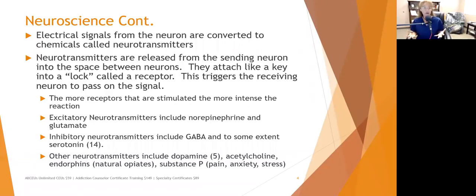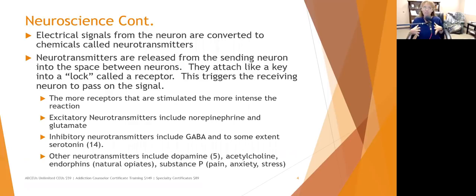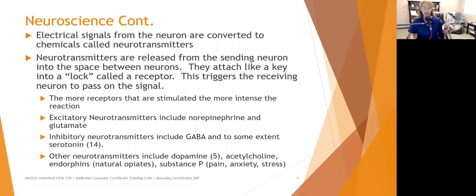For example, when somebody takes cocaine, it secretes excitatory neurotransmitters like glutamate into the synaptic cleft, flooding the receptors and giving the person a super charge of excitement. The excitatory neurotransmitters include norepinephrine and glutamate. This is overly simplistic — most neurotransmitters are involved in many things. There are other videos on the AllCEUs education channel at allceus.com/YouTube about neurotransmitters and neurobiology if you want to go deeper.